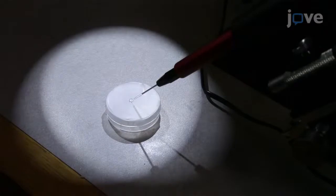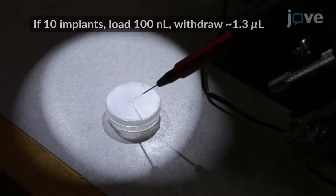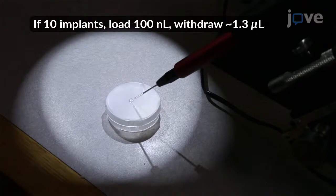To deposit the silk AAV, load an injection pipette with the amount of solution required for the number of fiber implants being made, plus approximately 30% extra to accommodate losses due to pipette clogging.